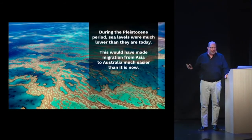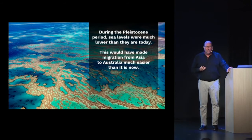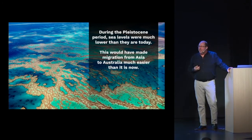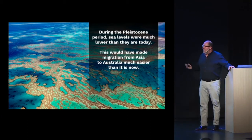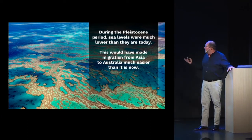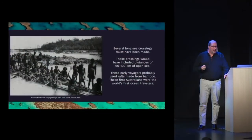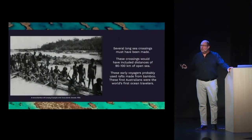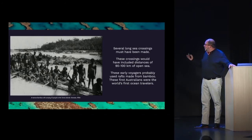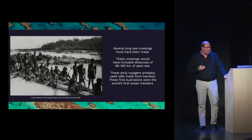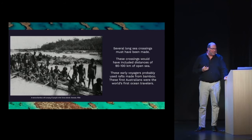During the Pleistocene period, sea levels were much lower than they are today, and this would have made migration from Southeast Asia — from the land masses of New Guinea into Australia — much easier than it is now. Long sea crossings could have been made, and we know they could have covered distances of at least 90 to 100 kilometers of open sea.